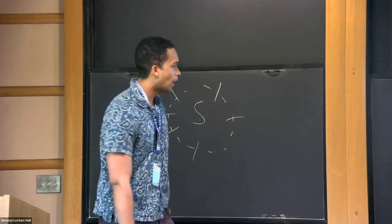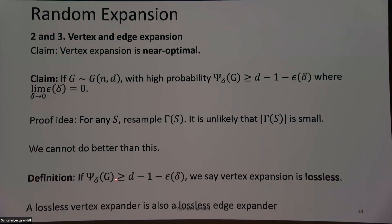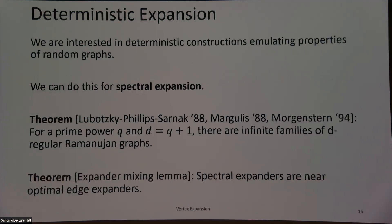If vertex expansion satisfies D−1 minus some small factor, we say the vertex expansion is lossless. If you think about it for a moment, a lossless vertex expander is also a lossless edge expander — if I expand to all different vertices, then certainly I expand to all different edges.